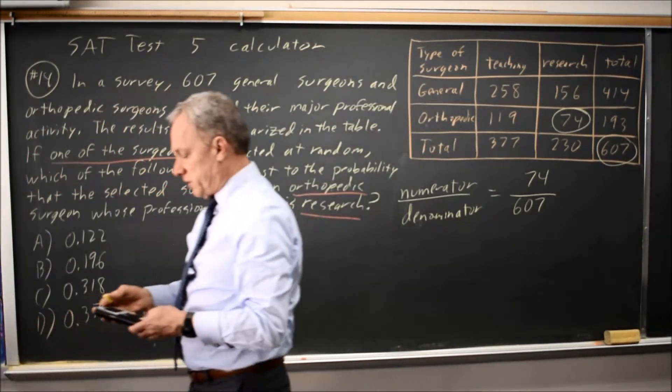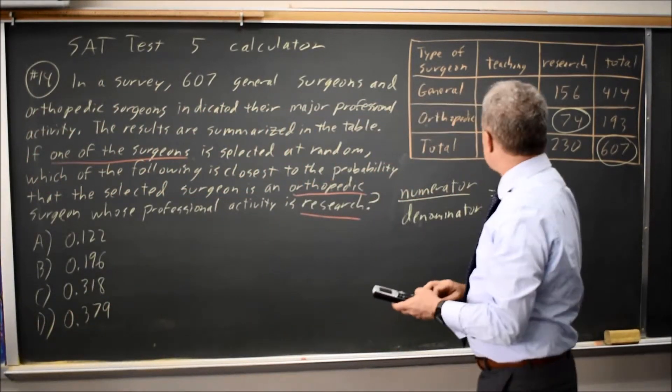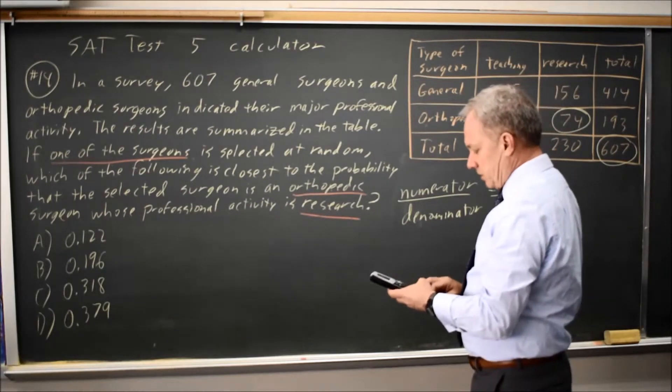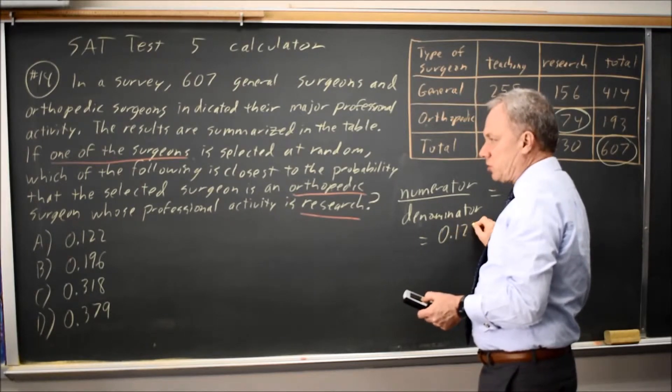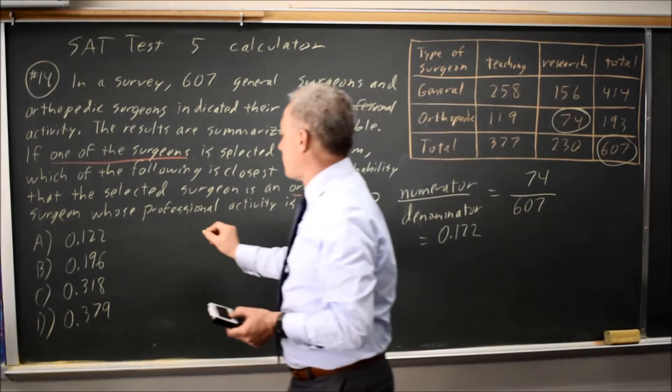This is a calculator question. So I'll take 74 over 607, and I get 0.122, which is choice A.